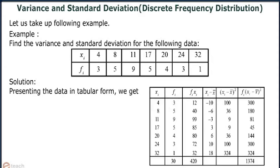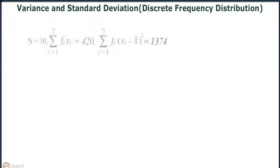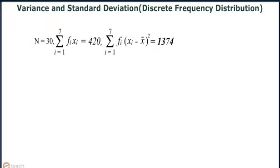We get summation fi equals 30, summation fi times xi equals 420, and summation fi times (xi minus x-bar) whole square equals 1,374. So n equals 30, summation i equals 1 to 7 of fi times xi equals 420, and summation i equals 1 to 7 of fi times (xi minus x-bar) whole square equals 1,374.